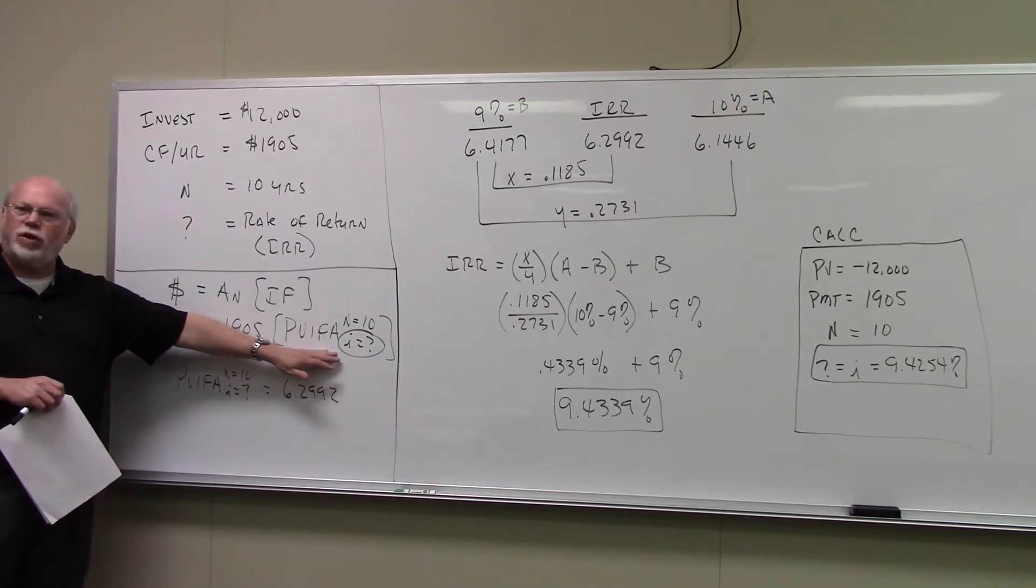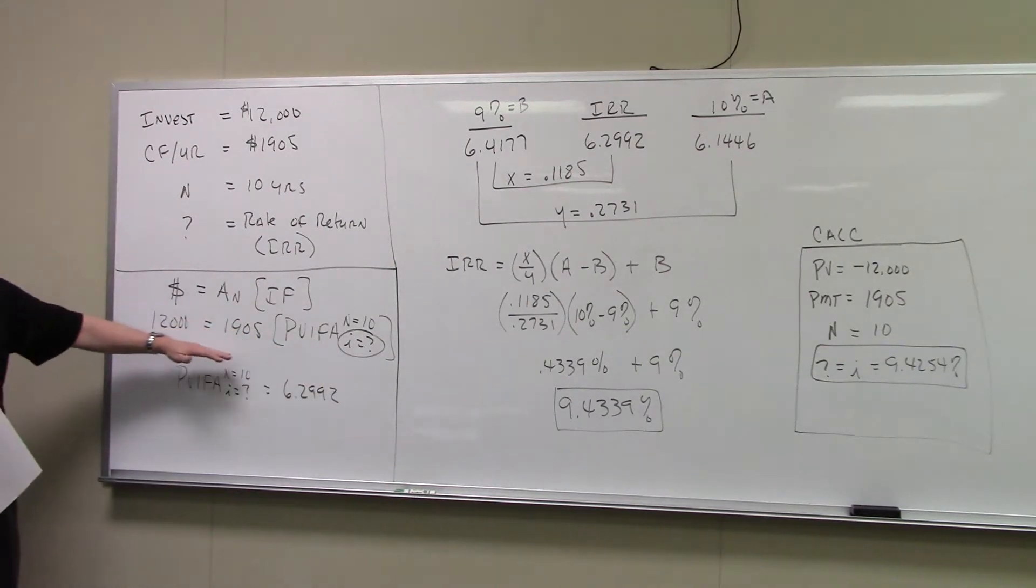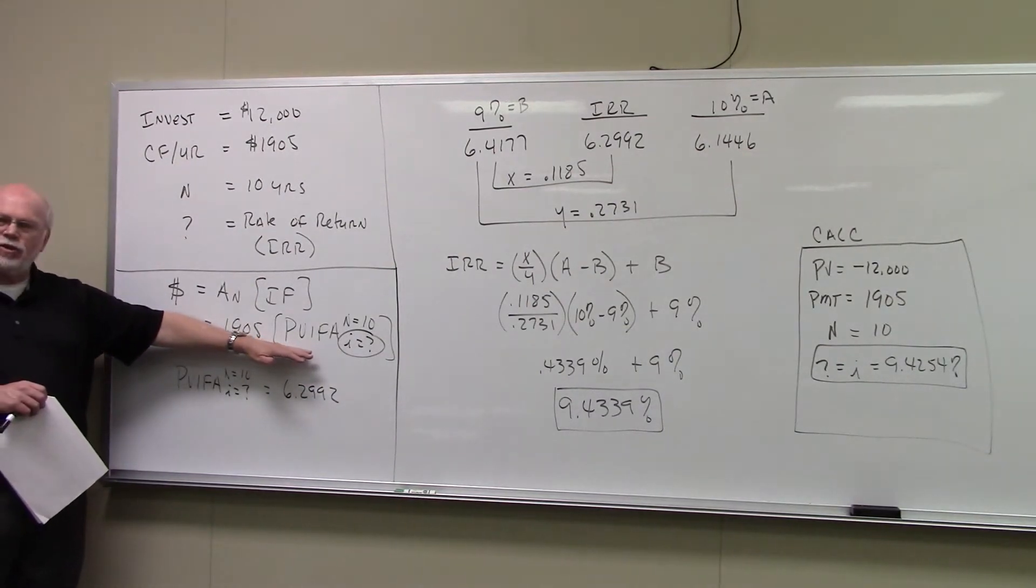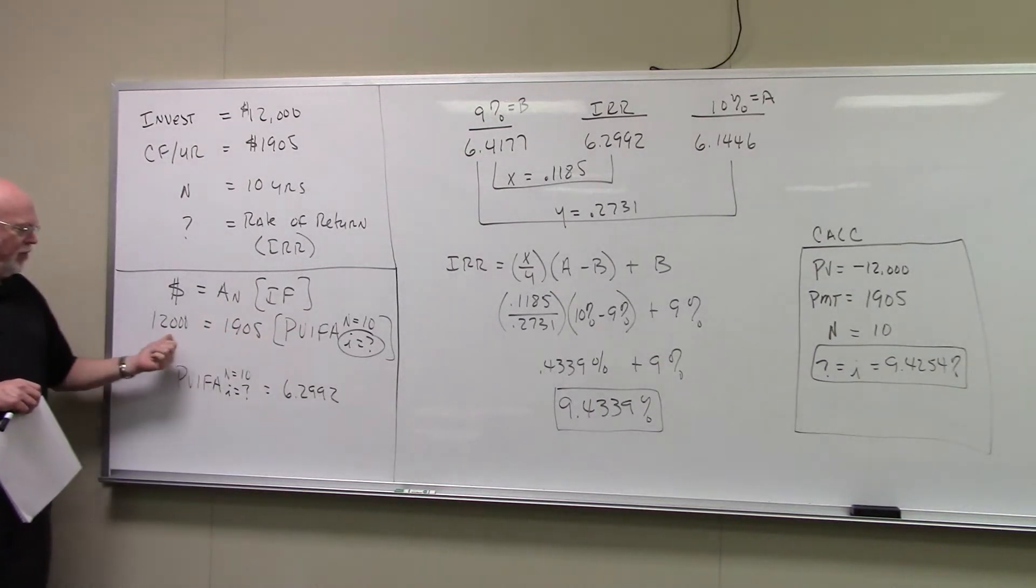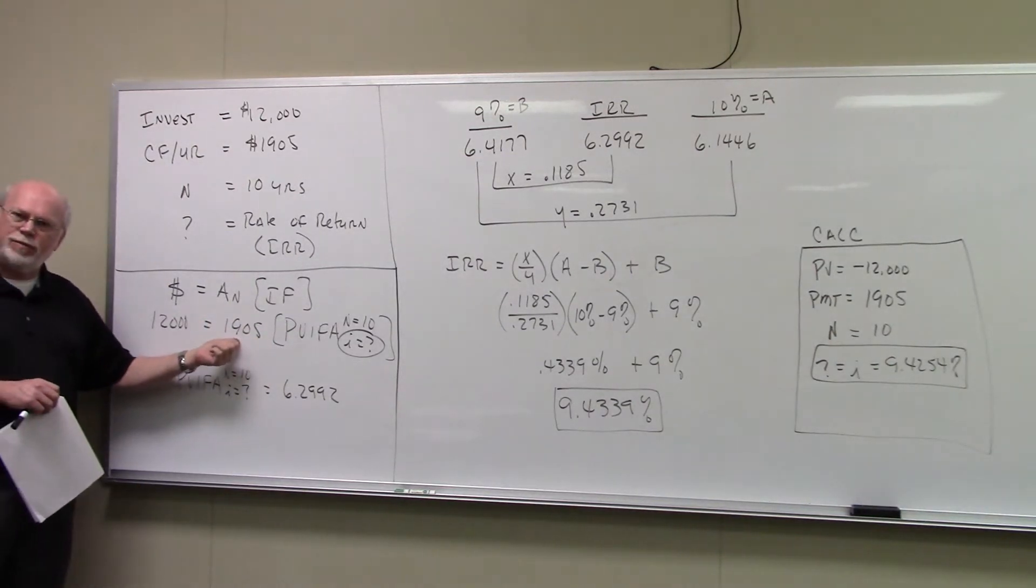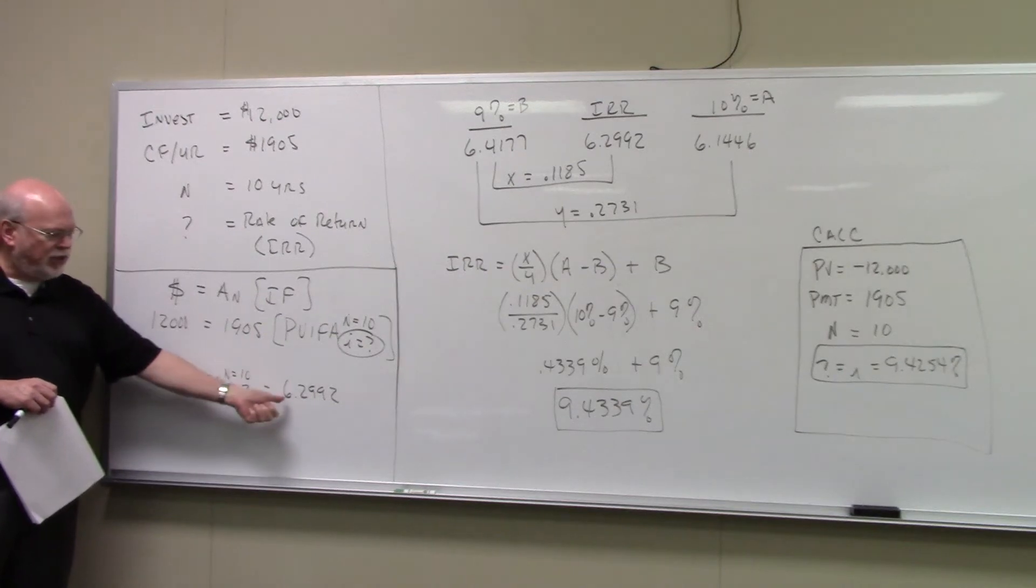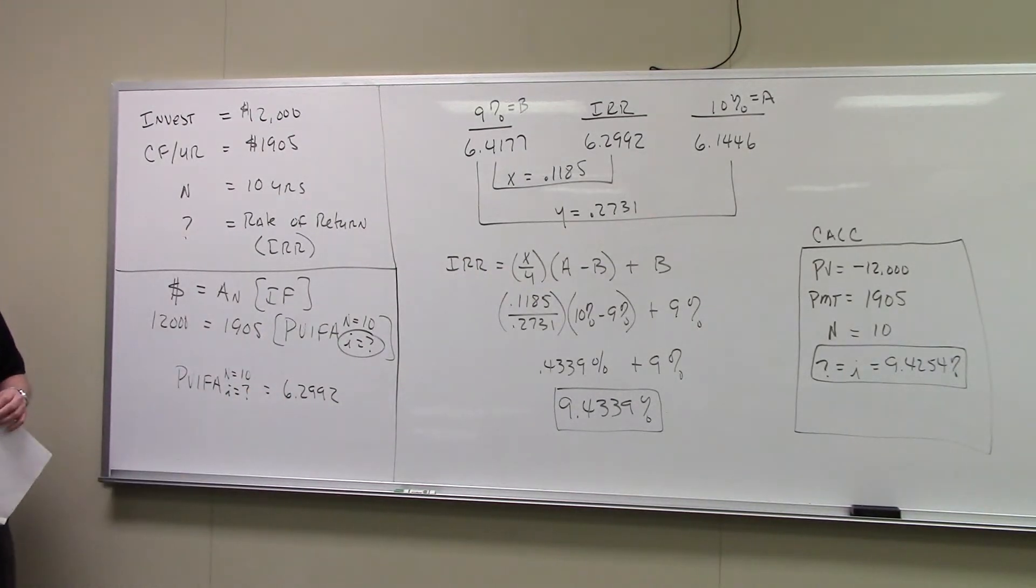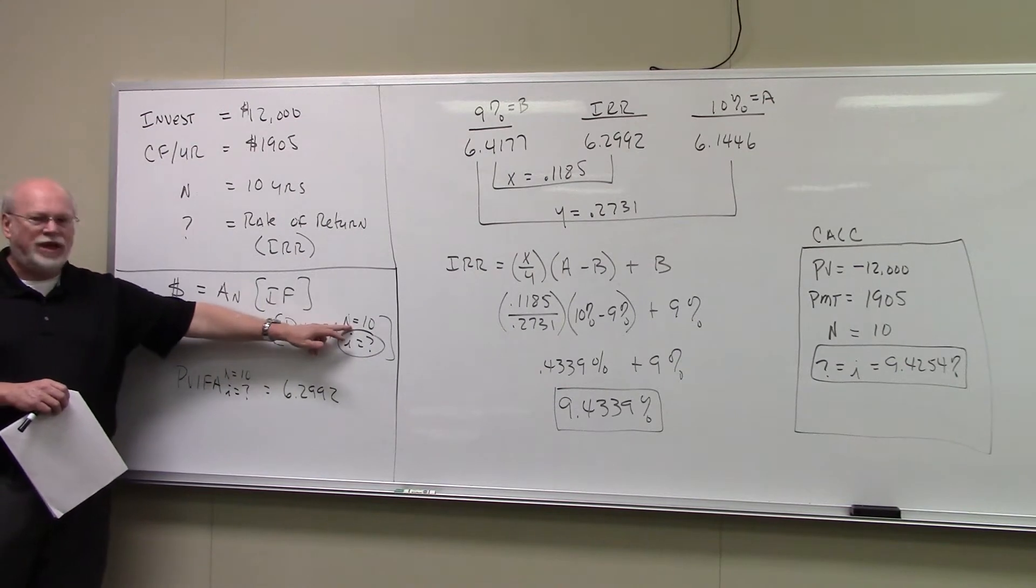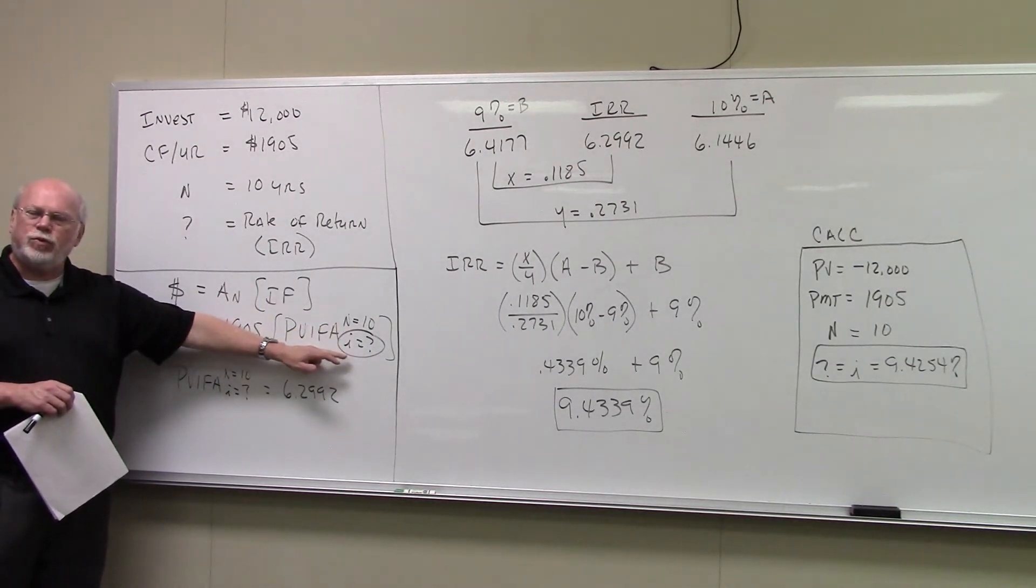What we're actually looking for is this little interest rate right here. Now, what we did before is we didn't solve for that directly, but we did solve for the interest factor. And if you take 12,000 divided by 1,905, you get 6.2992. And that's your PVIFA with N equal to 10 and I equal to something. And this is what we're looking for.